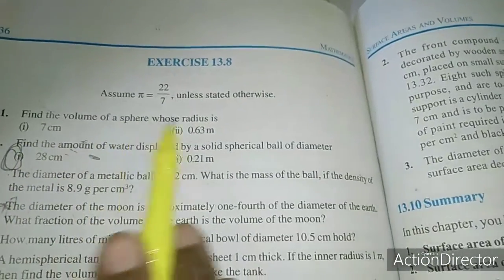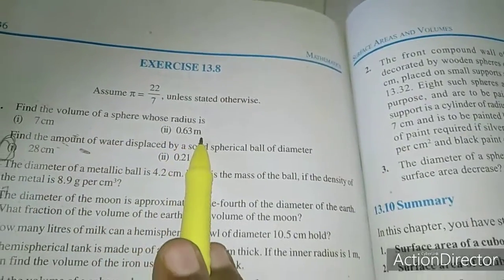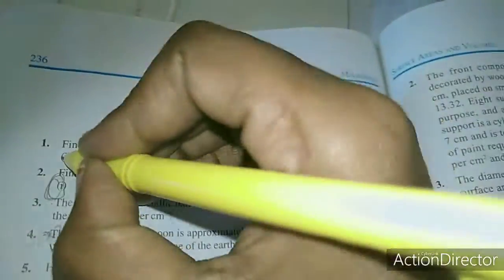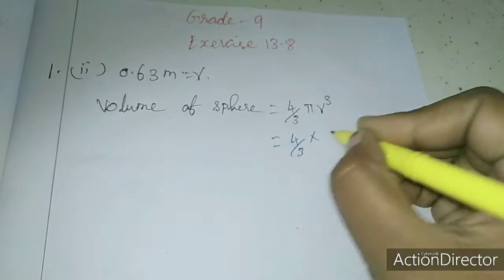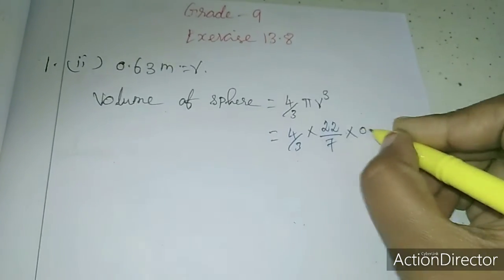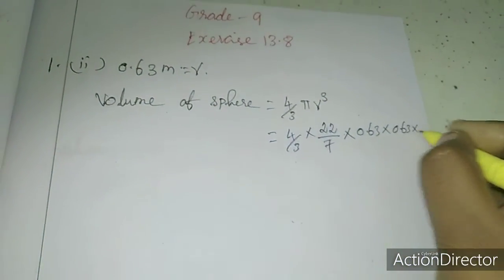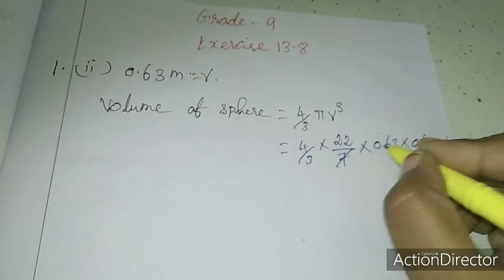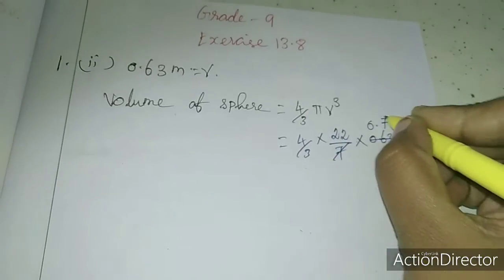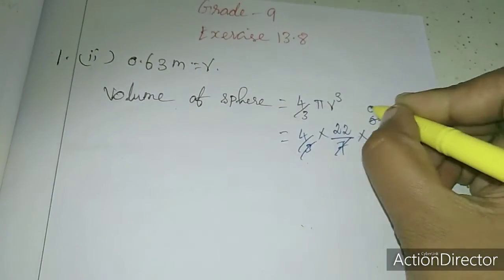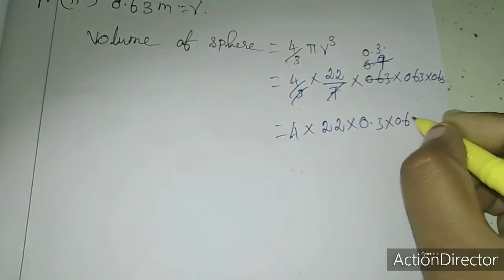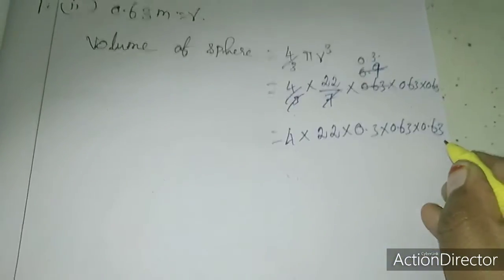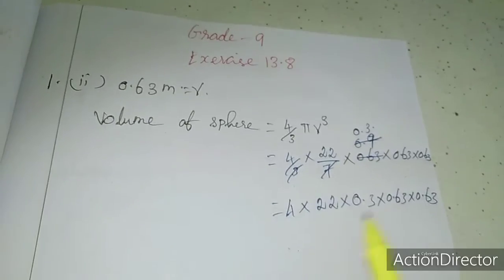First sum: find the volume of a sphere whose radius is 7 centimeter as well as 0.63 meter. The first part is homework for you. For the second part, r = 0.63. Volume of sphere is 4/3 × 22/7 × (0.63)³. After cancellation: 4 × 22 × 0.3 × 0.63 × 0.63. If you multiply this you will get the volume of the sphere. This is homework for you.